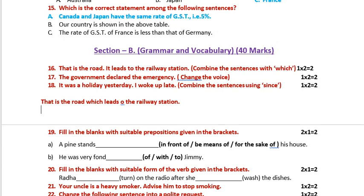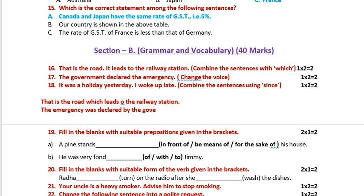The next one: 'The government declared the emergency.' This is in simple past, so we have to use 'was' or 'were.' Passive voice: 'The emergency was declared by the government.'